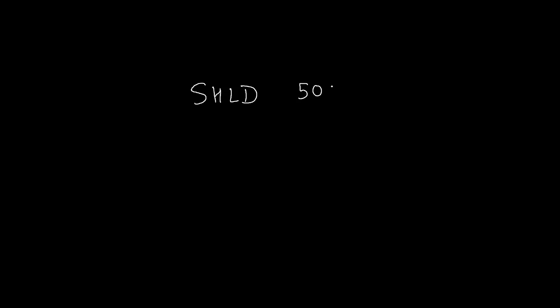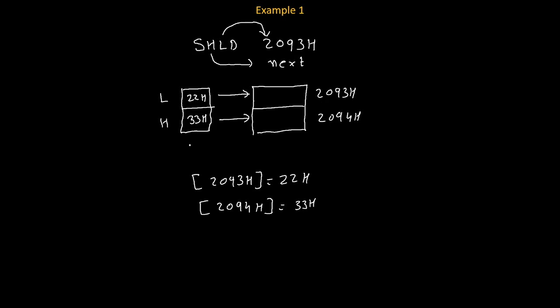Now let's talk about the addressing mode. Consider the instruction SHLD 5053H. In this instruction, the opcode is SHLD and the operand is 5053H, which is an address. Whenever the operand is an address, the addressing mode is direct addressing mode.